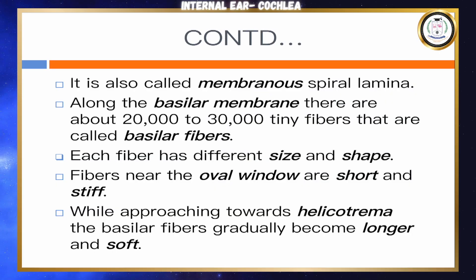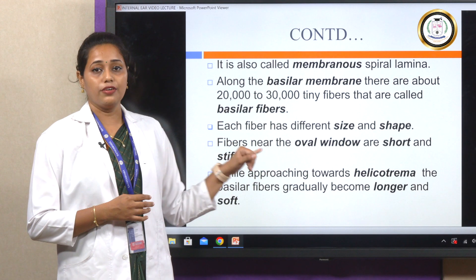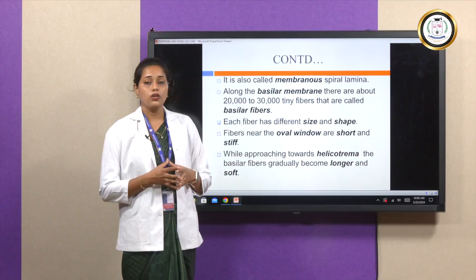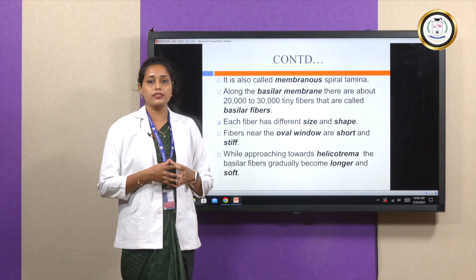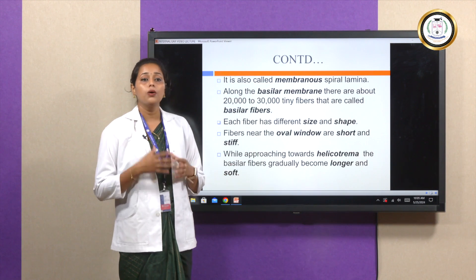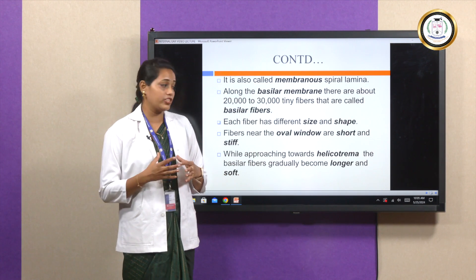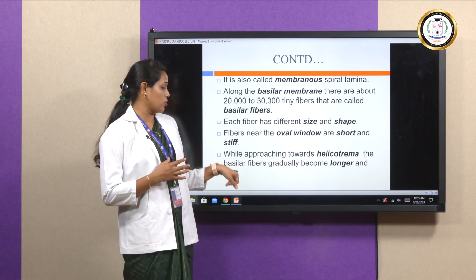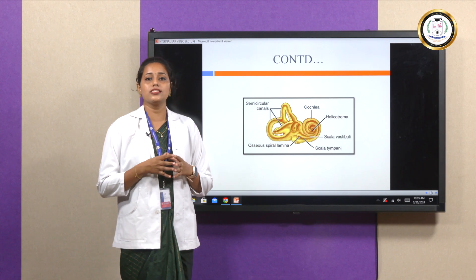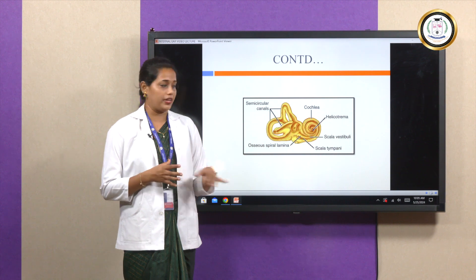Along the basilar membrane there are about 20,000 to 30,000 tiny fibers called basilar fibers. Each basilar fiber is of different size and shape. The fibers near the oval window are short and stiff, while the fibers approaching the helicotrema become gradually longer and softer. The helicotrema is the junction of the scala vestibuli and the scala tympani.